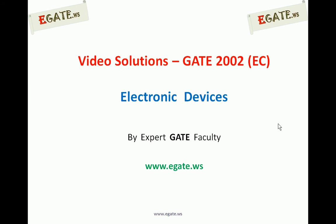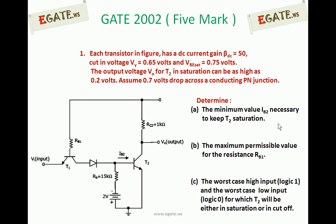Hello, we are discussing gate 2002 EC paper and the topic is electronic devices. This is a FIMA question from gate 2002. Look at the circuit diagram. Each transistor has a DC current gain of 50, that is beta value is 50, cut-in voltage V gamma is 0.65 volts, VBE saturation is 0.75 volts. The output voltage V0 for T2 in saturation can be as high as 0.2 volts. Assume 0.7 volts drop across a conducting PN junction.